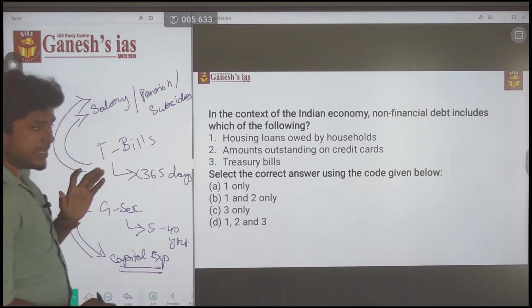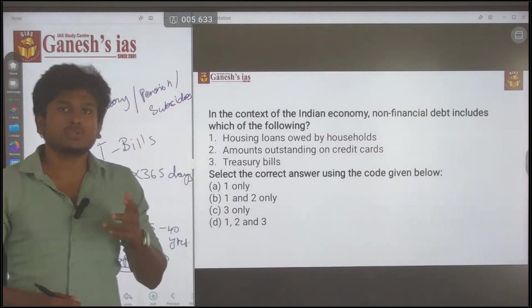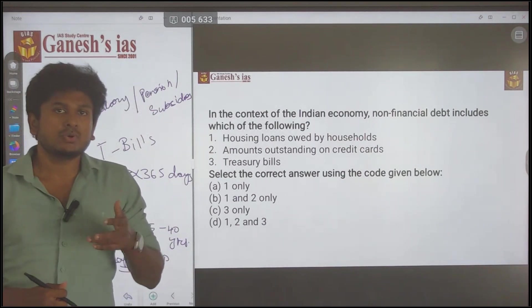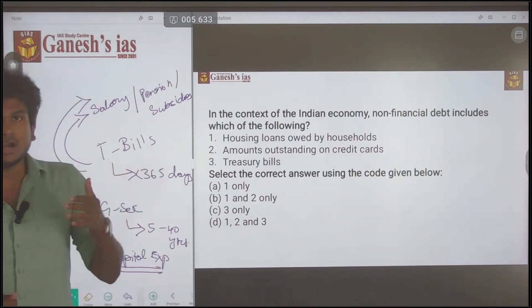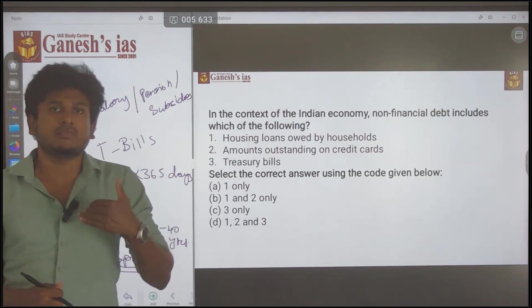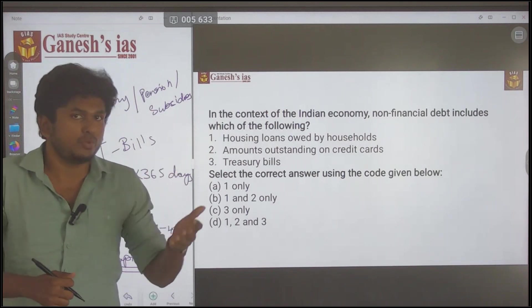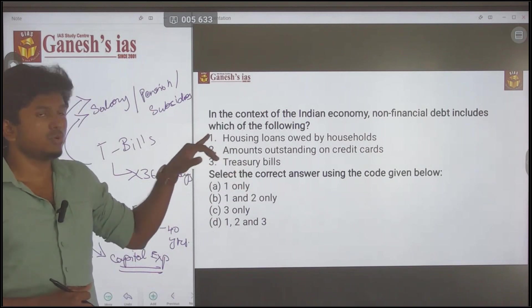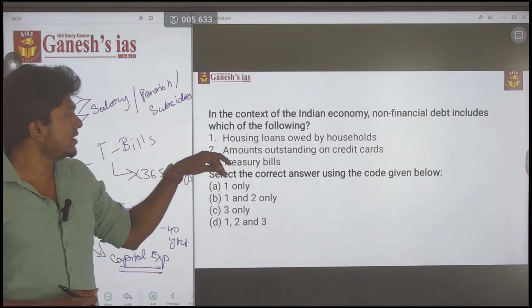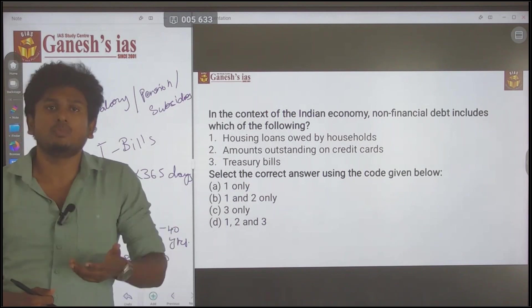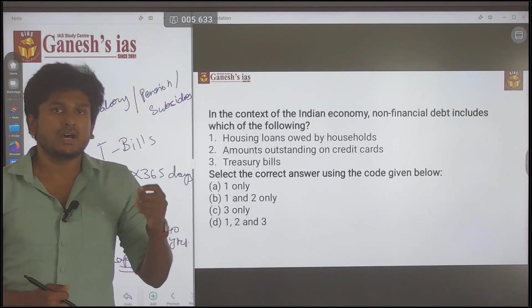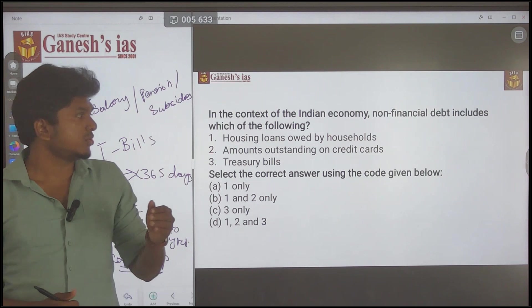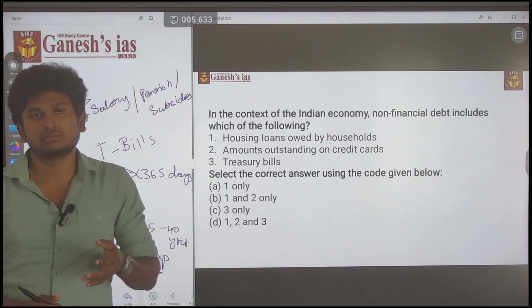With G-Sec borrowings, the government invests in infrastructure — that is capital expenditure. Treasury bills, being short-term, serve the consumption needs of the government. So if the third statement said G-Sec, then only statements one and two would be correct. But since it says treasury bills — which serve consumption needs — all three statements are correct and are called non-financial debt.